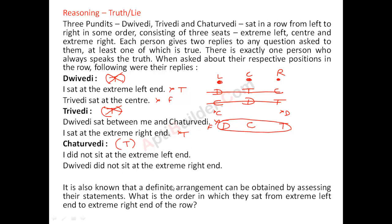It is also known that a definite arrangement can be obtained from their statements. So if a definite arrangement can be obtained, this must be the arrangement and there must not be any other possibility. So this is the arrangement: D is sitting at the extreme left end, C is sitting at the center, and T is sitting at the extreme right end.